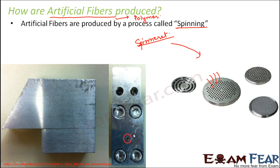Looking at a diagram of the spinneret, the red-colored portion shown is the polymer outlet. Depending on the type of spinneret used, solid or hollow fibers are formed — some fibers may be hollow inside while others are solid. There are many different types of spinnerets available, and the type of spinneret used determines the type of fiber formed.